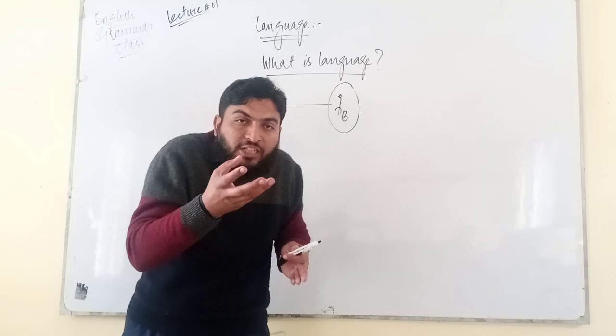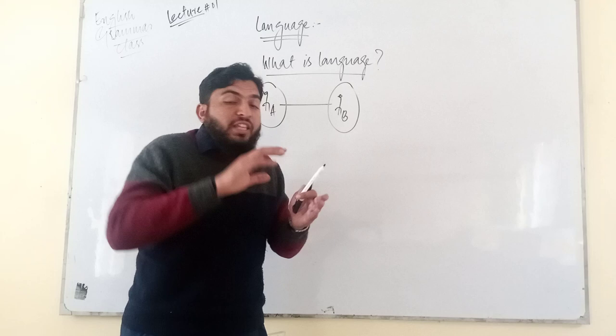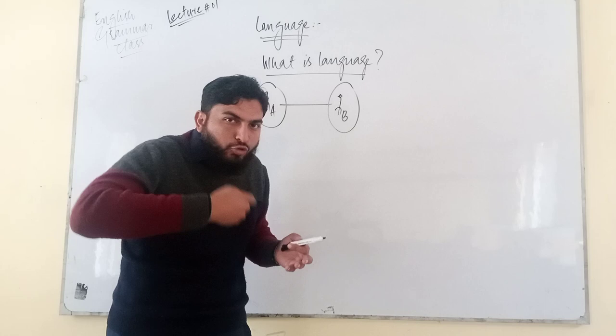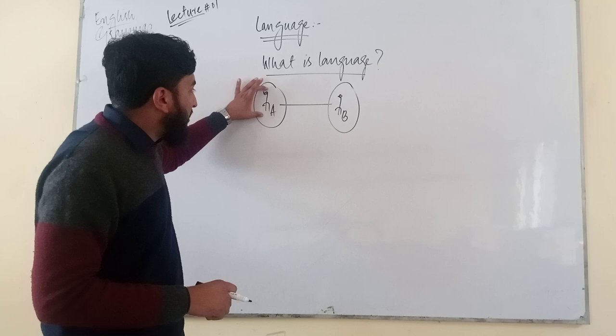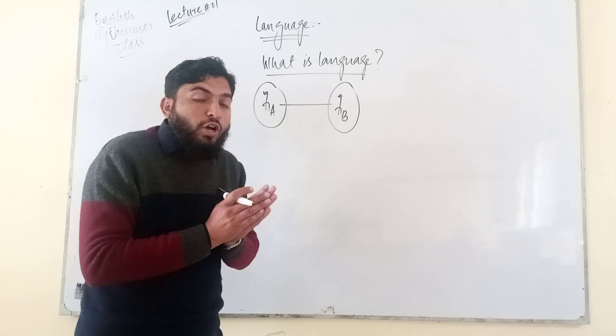اسی لیے what I say that body number A, body number B یہ دونوں اگر آپ اس میں رہنا چاہتے ہیں they need to speak, they need to write, they need to listen, they need to read, even they need to wave their hands, they need to provide some gestures تو ان کو چاہیے کہ کچھ بولے کچھ سنے کچھ لکھیں کچھ پڑھیں.